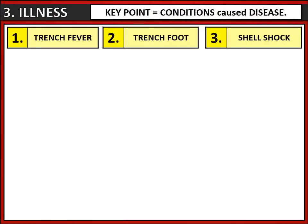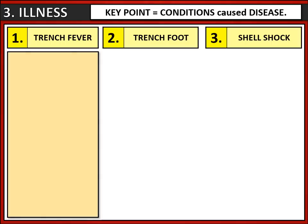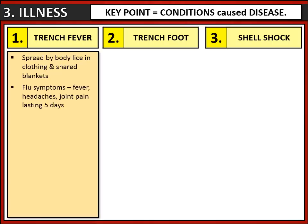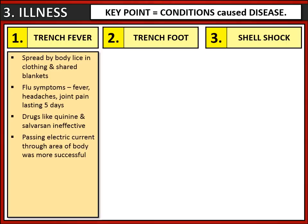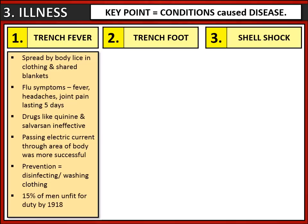Let's look at the illnesses that soldiers received. A key point to remember here is that it was the conditions that the soldiers were fighting in that caused disease. Looking at trench fever — this was caused by body lice that were often in the clothing and the blankets used by soldiers on the Western Front. It caused flu-like symptoms and left soldiers too weak to fight. The army tried lots of different methods of treatment like drugs such as quinine and Salvarsan 606, but these were found to be ineffective. Eventually they started to use a method of passing electric currents through different areas of the body, which had a little bit more success. The army even tried to prevent trench fever through a programme to disinfect and wash clothing on a more regular basis. But even by 1918, 15% of men in the army were seen as unfit for duty due to trench fever, so it continued to be a problem.